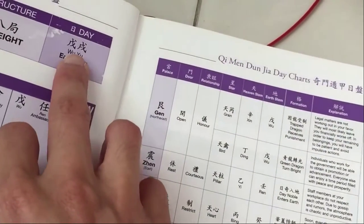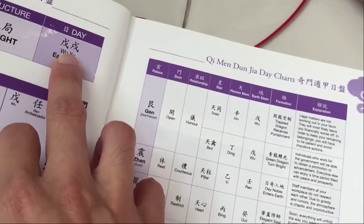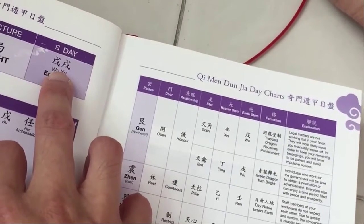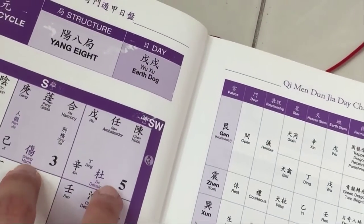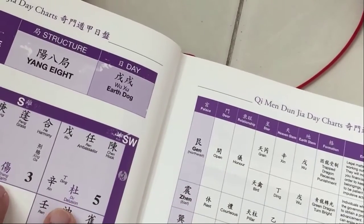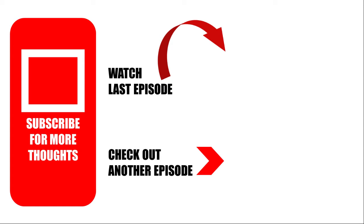From there, the 1st of January becomes the next entry, and I continue snapping photos and using the doors. I face all these directions whenever I do my social media posting. That's basically how I plot the Chi Men day charts — it's meant for one-day use. I haven't fully looked into the stars, deities, and stems, but sometimes I take a look at those too.